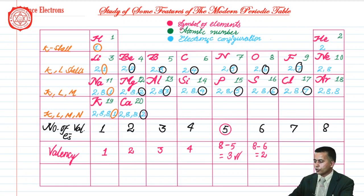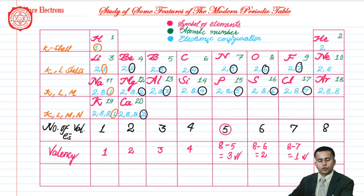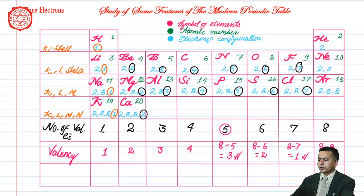Following the same rule, for the column containing fluorine and chlorine, eight minus seven equals one, so their valency is one. For the rightmost column — the inert gases — eight minus eight equals zero, so the valency of all inert gas elements is zero.